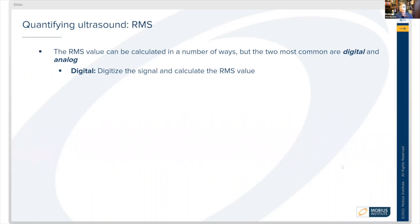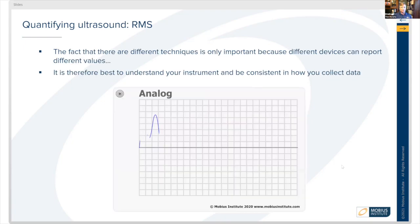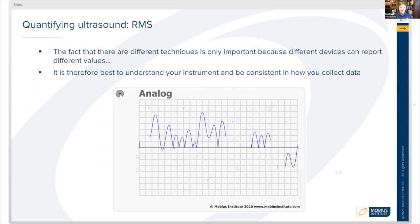The RMS value can be calculated in a number of ways, but the most common are digital and analog. Digital is where we digitize the signal and calculate the RMS value from those discrete points. Analog is where the circuitry rectifies the voltage and makes everything positive — all values below the baseline are flipped onto the top of the baseline — and then we calculate the RMS that way.